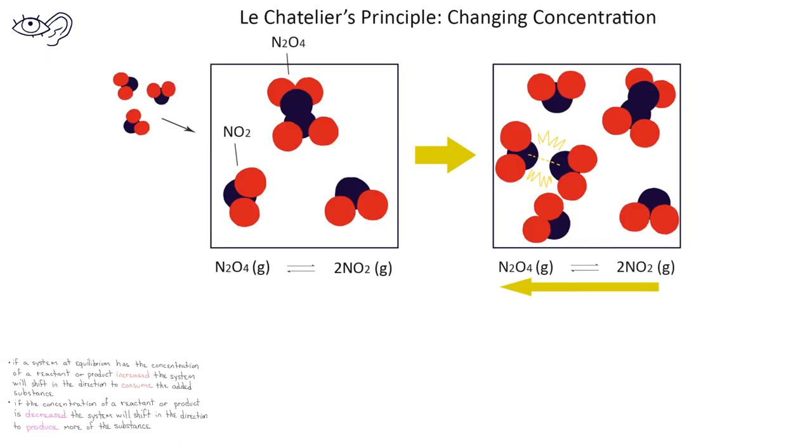This image demonstrates Le Chatelier's principle when it deals with changing the concentration of a reactant or product. We represent the reaction of N2O4 producing two NO2 molecules. In the first square, we see that we have an equilibrium concentration of NO2 and N2O4. And then we add some NO2 molecules to the system.